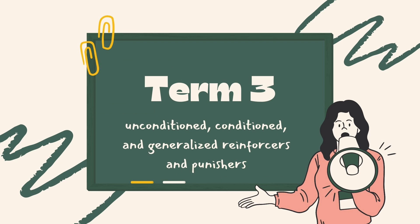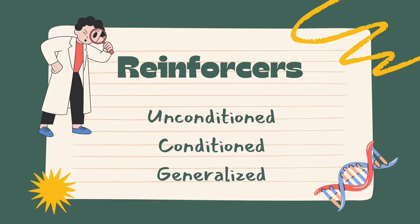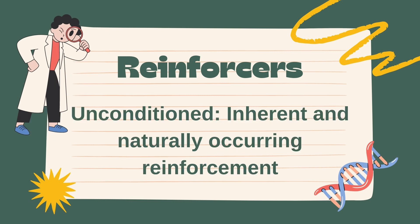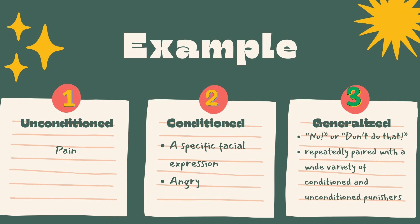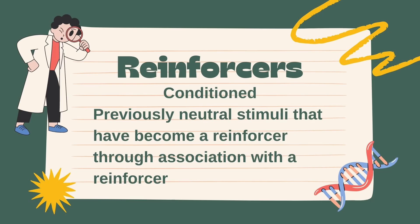The third section covers three important concepts in behavior analysis: unconditioned, conditioned, and generalized reinforcers and punishers. An unconditioned reinforcer or punisher is something that naturally — without any learning or conditioning — produces a positive or negative response. For example, food is an unconditioned reinforcer for someone who is hungry, and pain is an unconditioned punisher for someone who touches a hot stove.